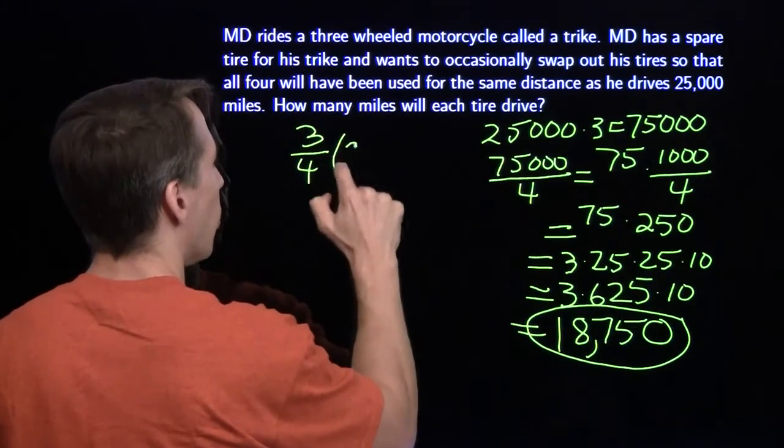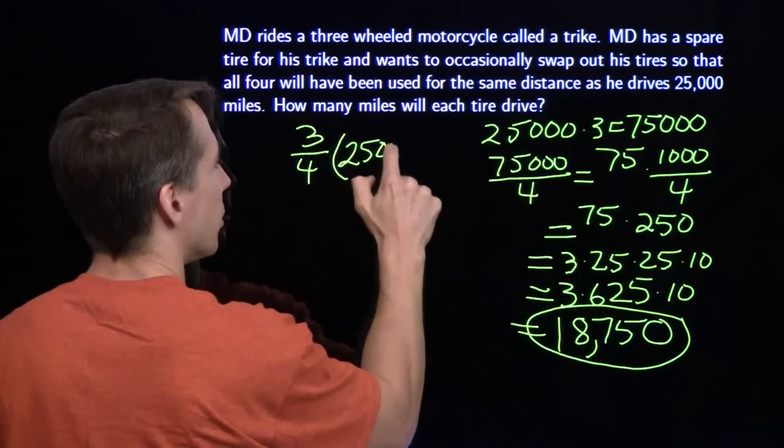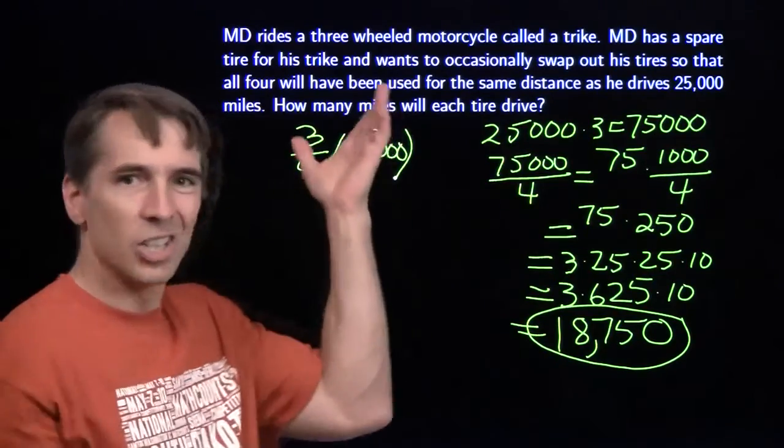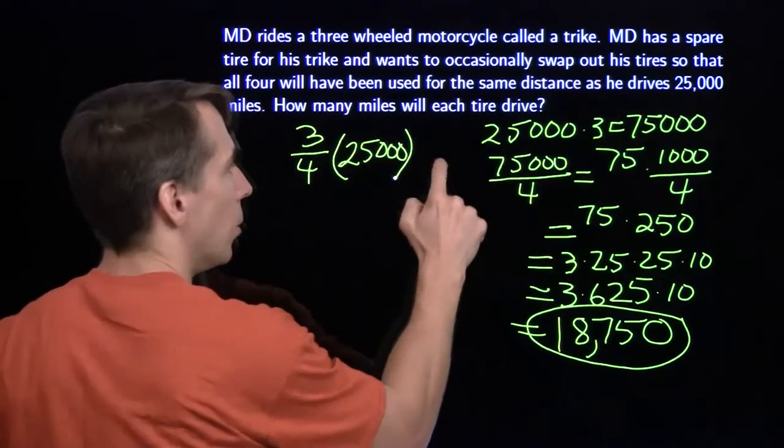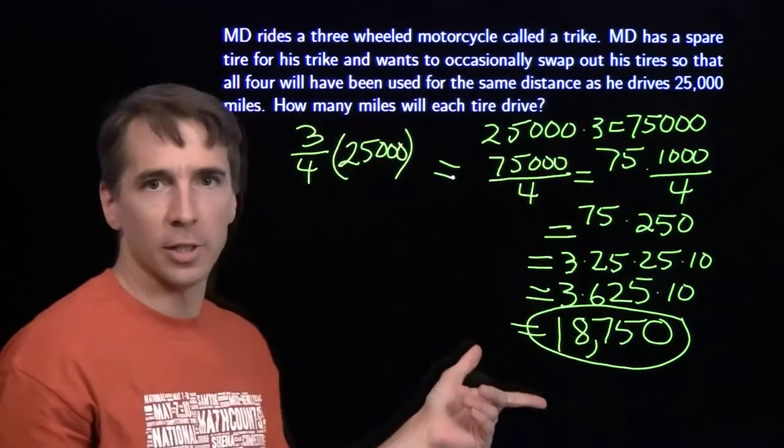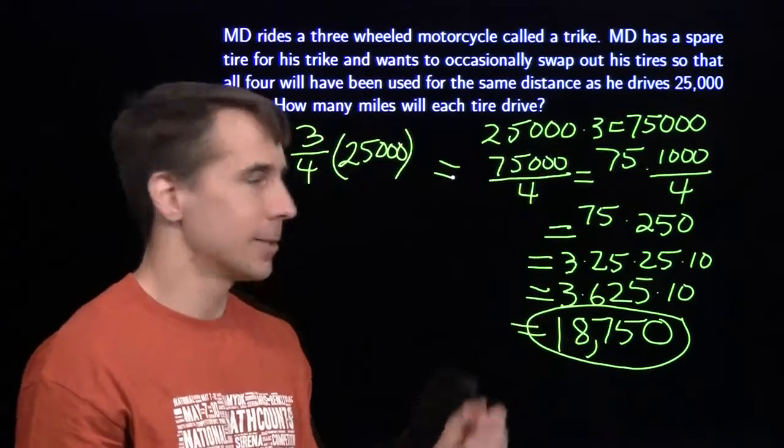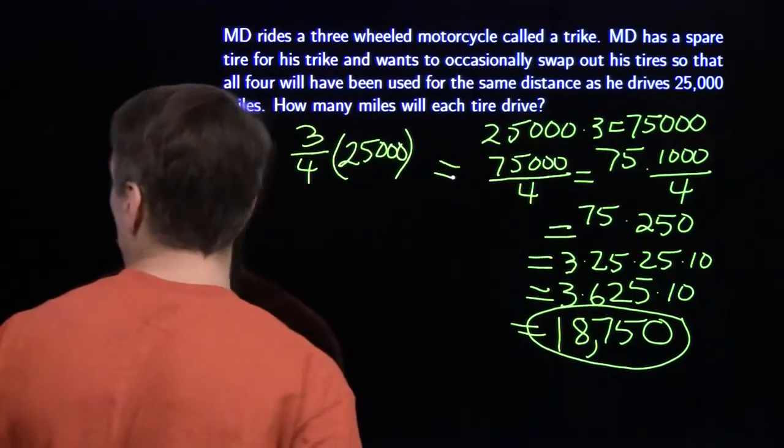Our answer is just three quarters of the time. Three quarters of those 25,000 miles is how much each tire is going to go. Three quarters of 25,000. And we've got the same calculation as before. Get the same answer.